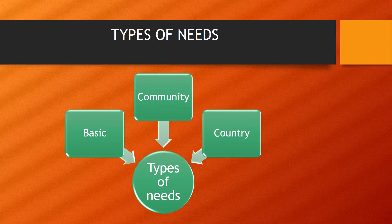In Grade 7, we look at three types of needs: basic needs, community needs and country needs. All individuals have certain basic needs that have to be satisfied in order for them to survive. These basic needs include the need for food, water, shelter and security.